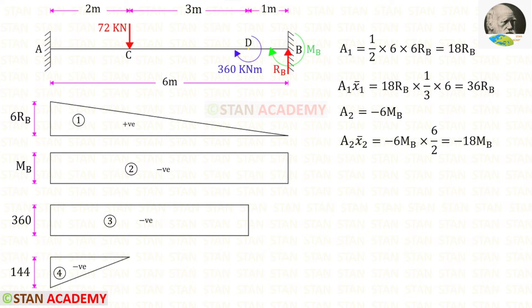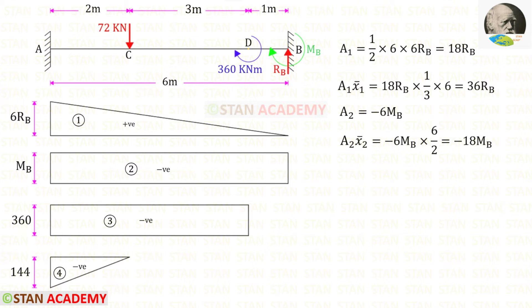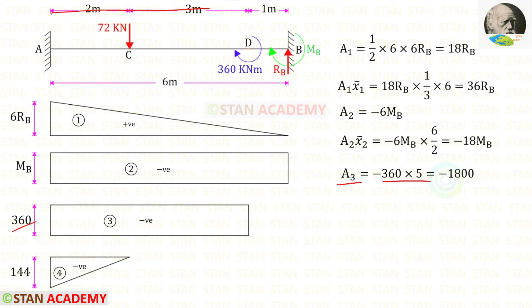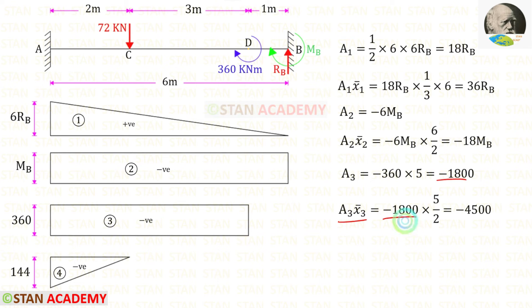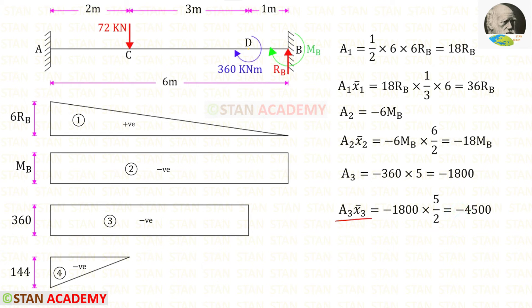Now let us find Area 2 times x̄₂. For the rectangle, the centroid lies in the center. When we divide the length 6 by 2 we get the centroid distance. For Area 2 times x̄₂ we will get minus 18MB. Now let us find Area 3. When we multiply 360 with 5 we get Area 3. For Area 3 times x̄₃ — since the centroid of this rectangle lies at the center, we divide 5 by 2 to get the centroid distance. For Area 3 times x̄₃ we will get minus 4500.